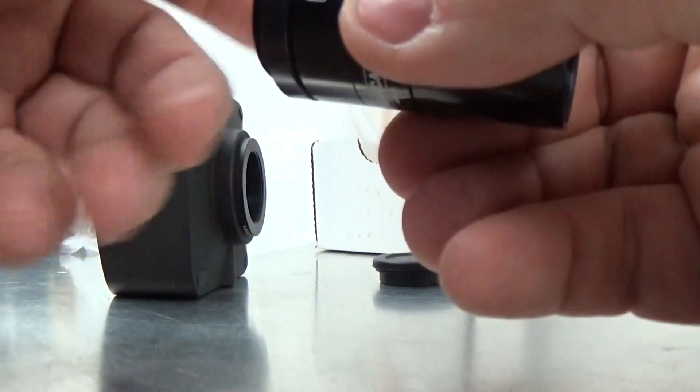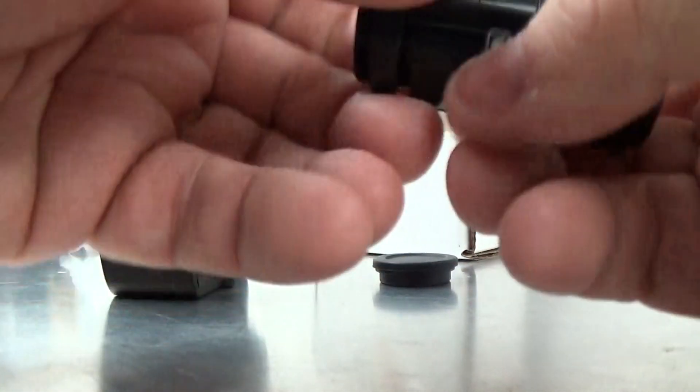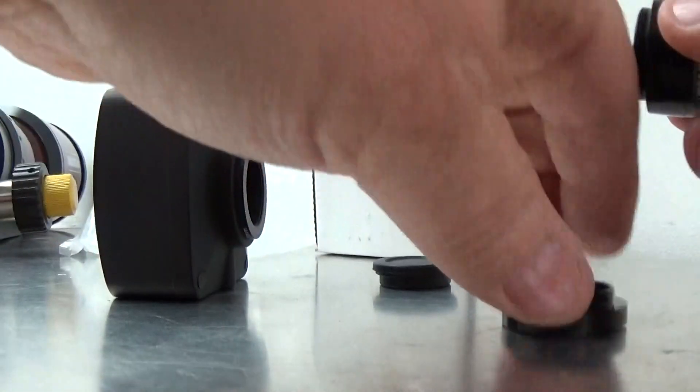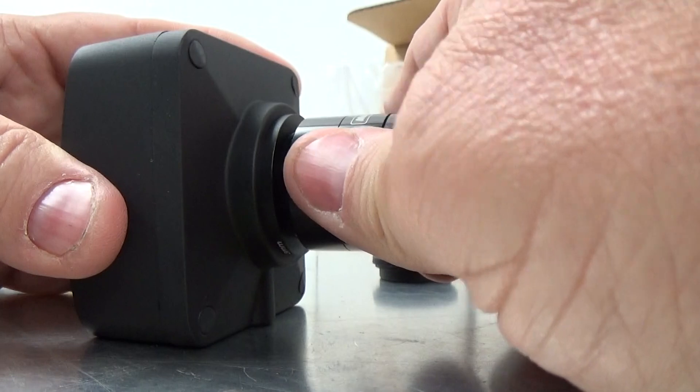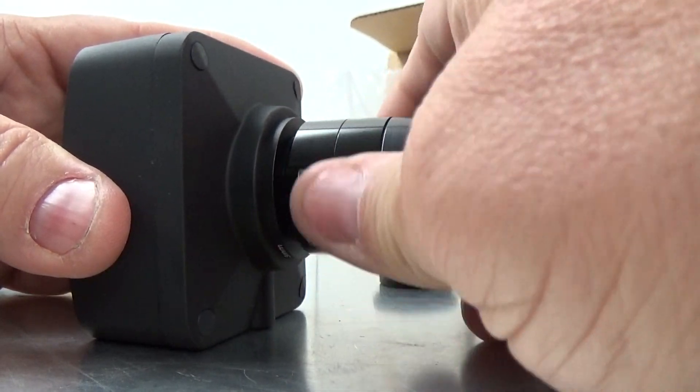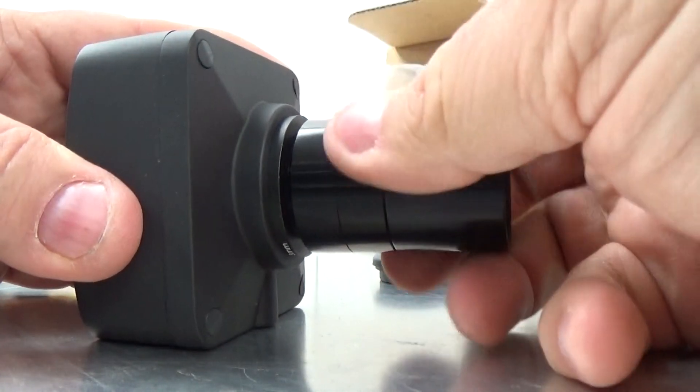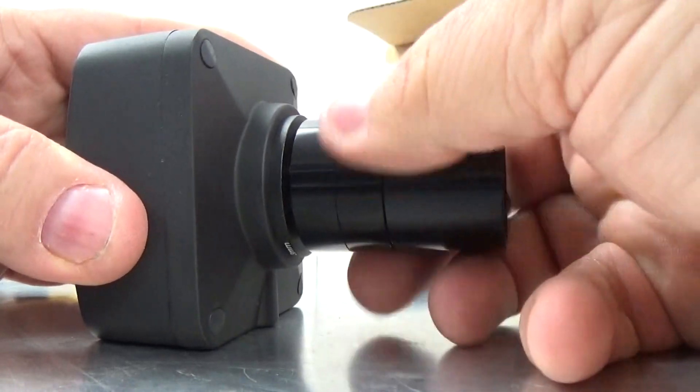Either way, this is a C-mount type threading. If we put this on the camera directly, gently put it on, screw it in, and you're going to be ready to go in a few minutes.